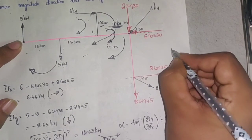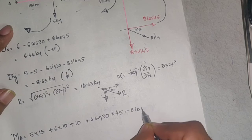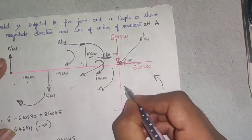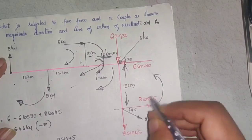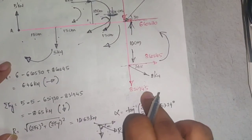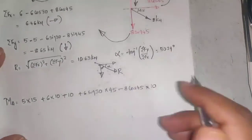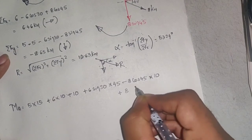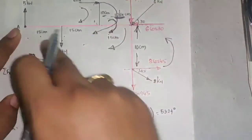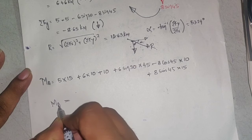The 8 cos 45 force rotates anti-clockwise about A, so minus 8 cos 45 × 10 cm. The 8 sin 45 force rotates clockwise, so plus 8 sin 45 × 15 cm (perpendicular distance 15 cm from A). Solving all these terms together gives the moment about A.